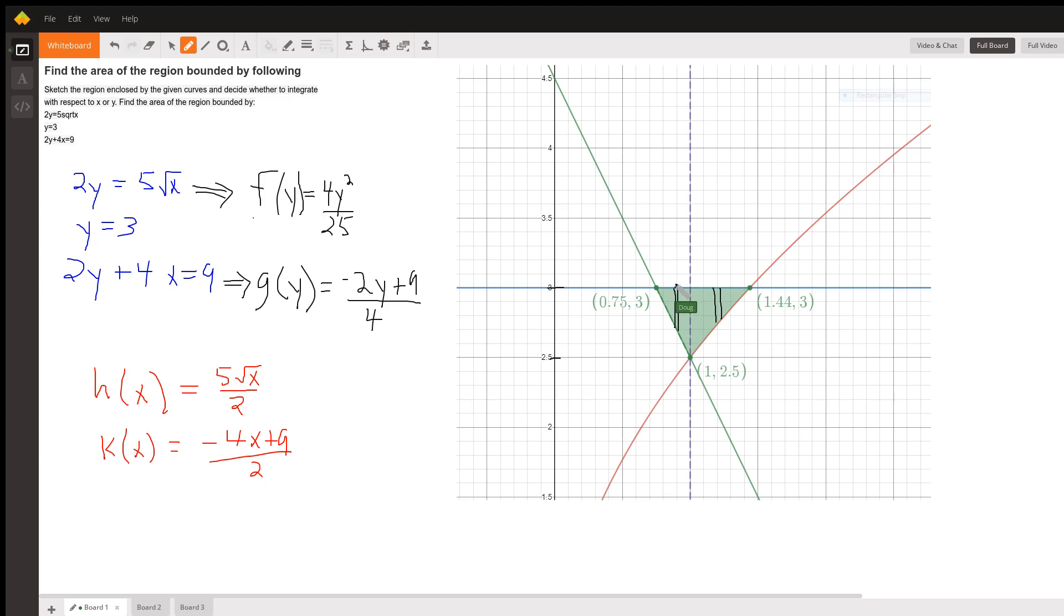We'll be taking 3 minus, well, x depends on this guy, right? That will be the corresponding y value. And we'll have to take 3 minus, that minus 4x plus 9 divided by 2.